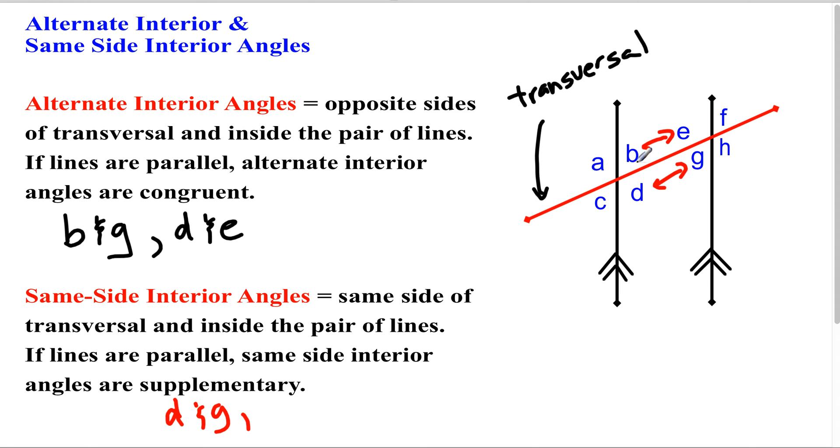My other ones here would be B and E. Now, the difference is if our lines are parallel, they're not going to be congruent. If they're same-side interior and the lines are parallel, they're going to be supplementary.